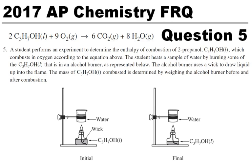We're going to look at the 2017 AP Chemistry FRQ, question number five. A student performs an experiment to determine the enthalpy of combustion of 2-propanol, that's rubbing alcohol, which combusts in oxygen according to the equation above. The student heats a sample of water by burning some of the C3H7OH liquid that is in an alcohol burner, as represented below. The alcohol burner uses a wick to draw liquid up into the flame. The mass of the alcohol combusted is determined by weighing the alcohol burner before and after the combustion.